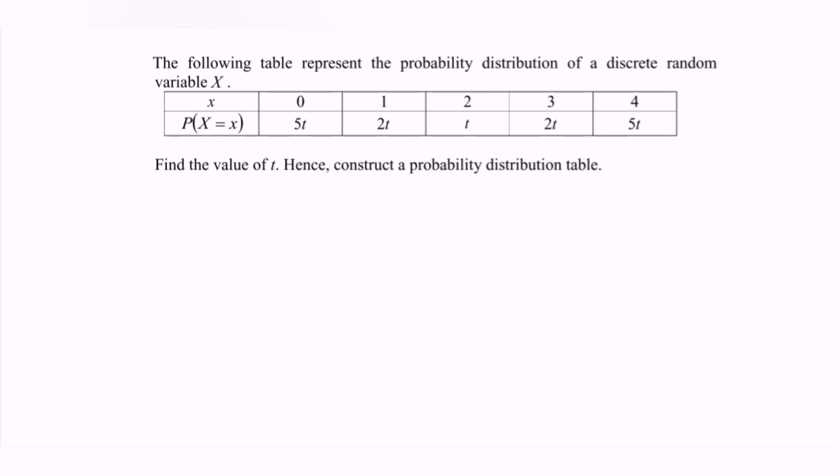The following table represents the probability distribution of a discrete random variable x. The table shows the random variable x with the values 0, 1, 2, 3, and 4.